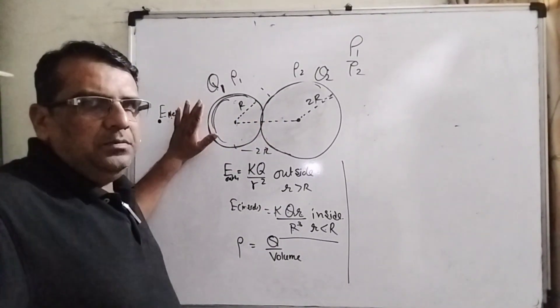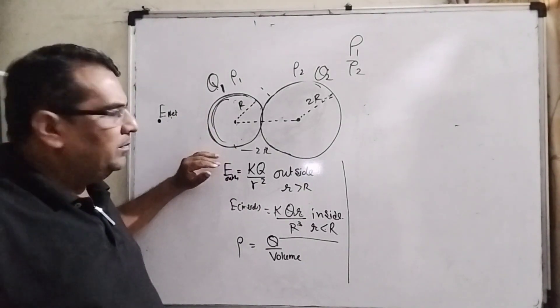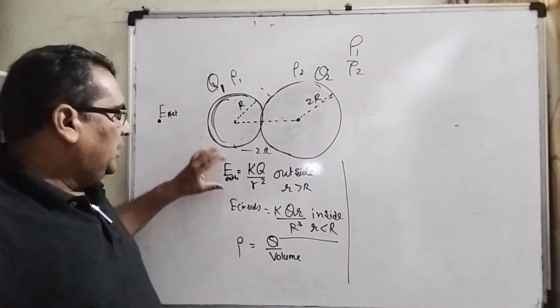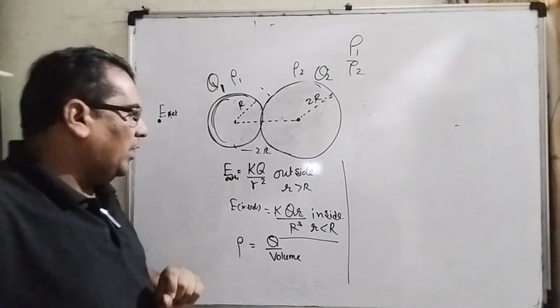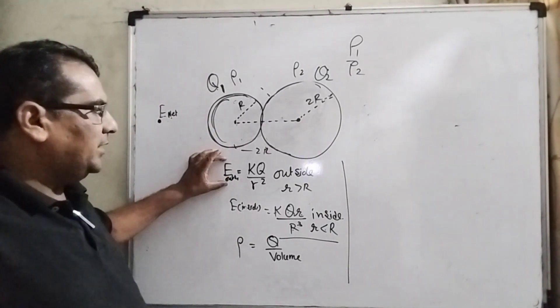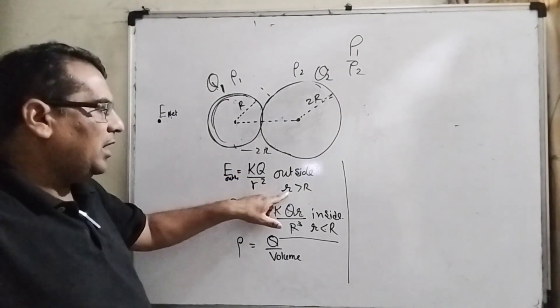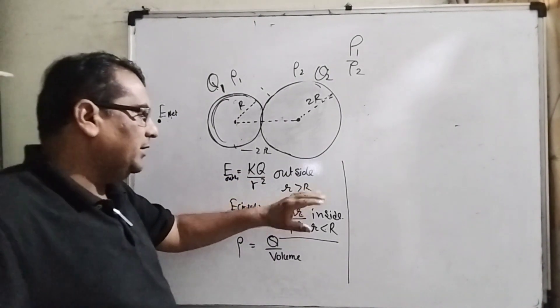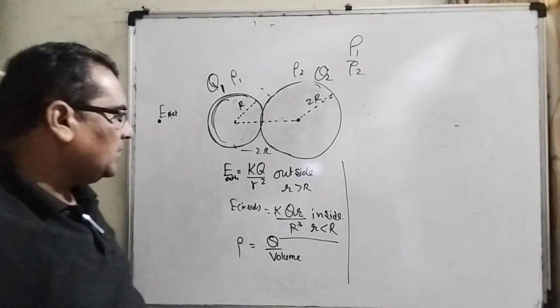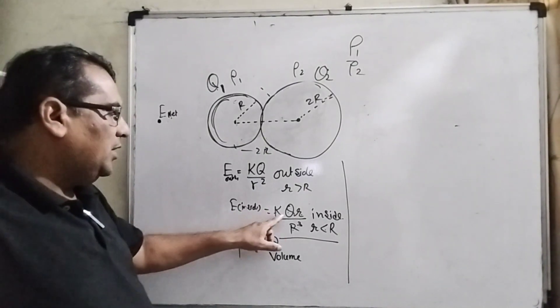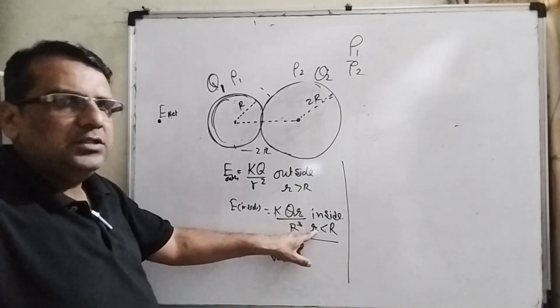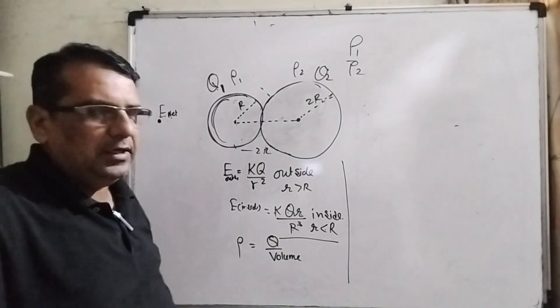This question is totally conceptual and formula based question. Here we use three formulas. Electric field outside the charge body is k q over r square where r is greater than capital R. Here inside k q small r over capital R cubed.